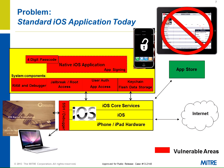Summarizing that together: if you look at a standard iOS app today, there are vulnerabilities — the four-digit passcode, various system components. Once you're in, if the device is jailbroken, you can have root access. The memory itself, the debugger — ways to get a hold of your device and your application. User authentication and application access: if you don't build this into your app, you're using the OS, which really doesn't provide much. And the keychain and flash data storage — once you have the passcode, you can access both.